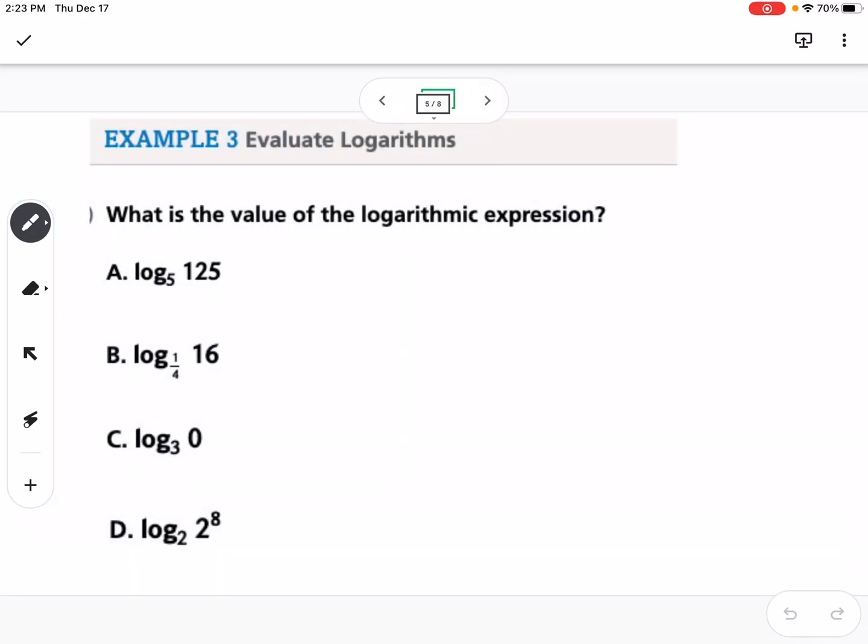Example 3 is evaluating. We're going to use this idea of switching the form to figure this out without a calculator. If we switch the form, like if I say this is equal to question mark, then if I switch the form, this would be 5 to the question mark equals 125.